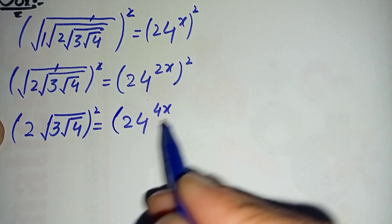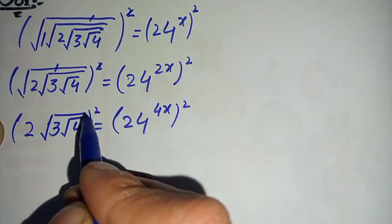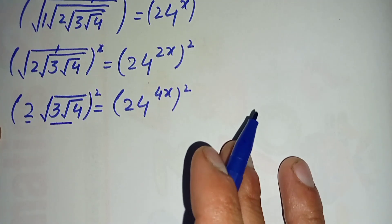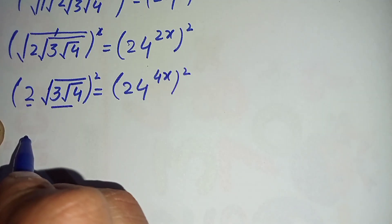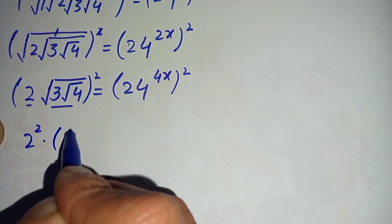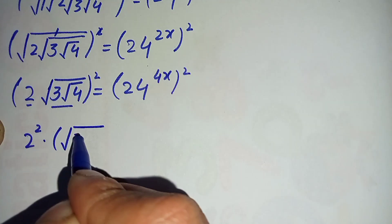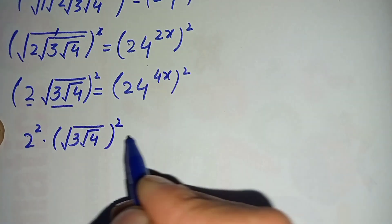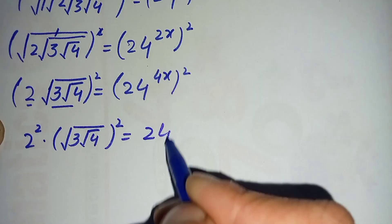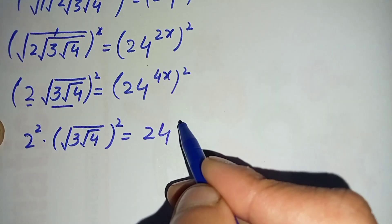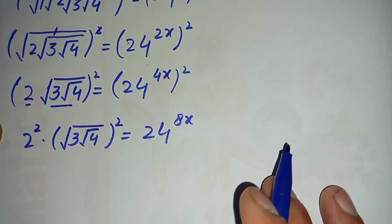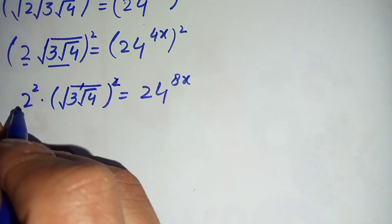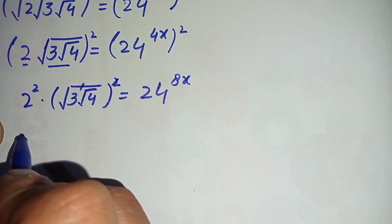Taking square on both sides, this square will be applied on each number. This becomes 2 raised to power 2 times square root of 3 times square root of 4, raised to power 2, is equal to 24 raised to power 8x. Here this square and this square root will be cancelled.